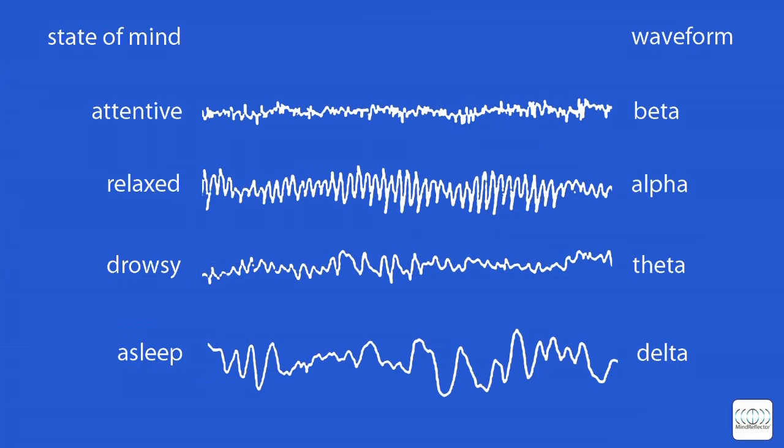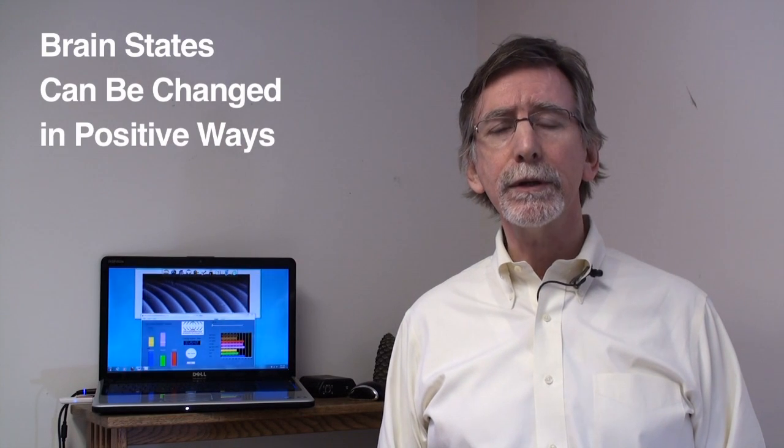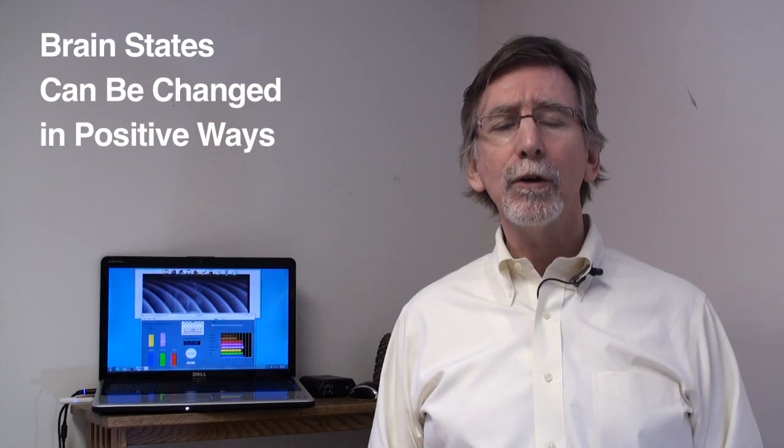Because the brain behaves differently when it is relaxed or agitated, focused or inattentive, open to change or resistant to change, these states can be monitored and with feedback encouraged to change in positive ways.